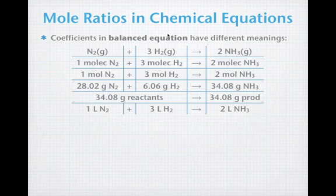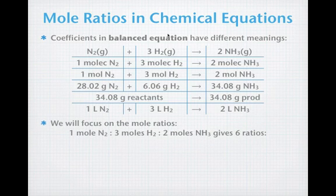What we're going to do, though, for now, is let's focus in on the mole ratios. In this equation, we're going to have one mole of nitrogen gas is always going to relate to 3 moles of hydrogen and 2 moles of ammonia. And what this is going to do is give us 6 ratios. Let's look at what those ratios are.